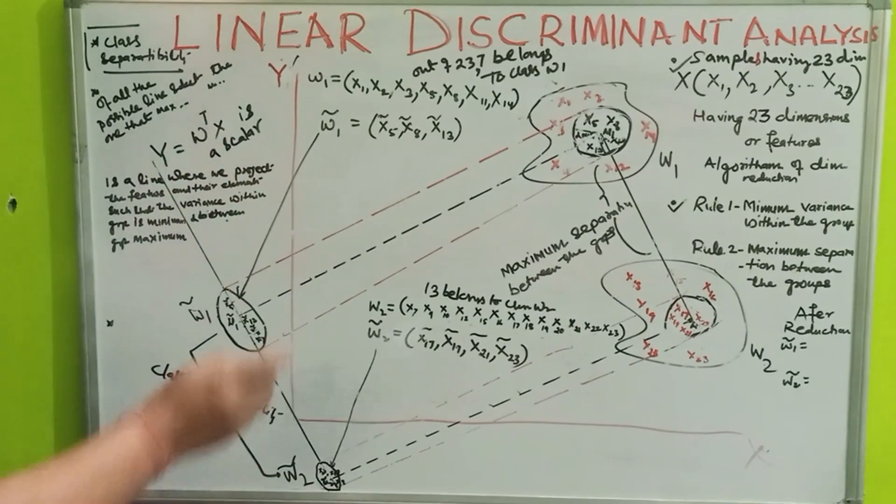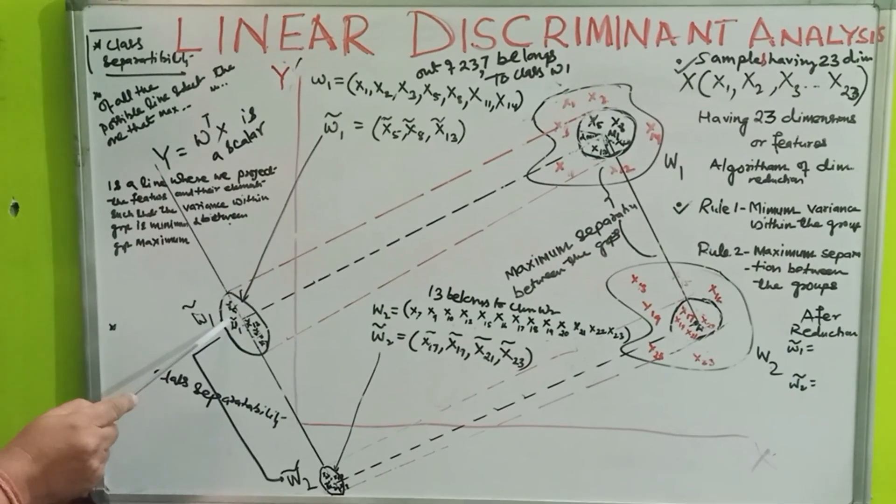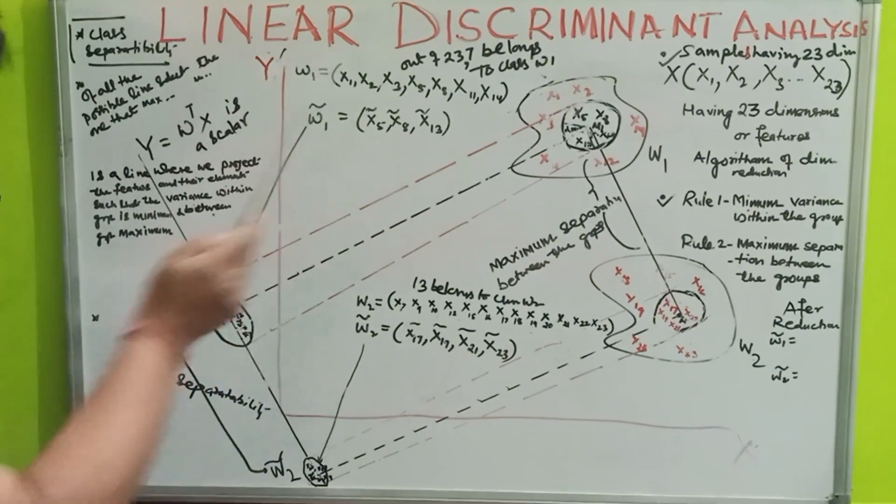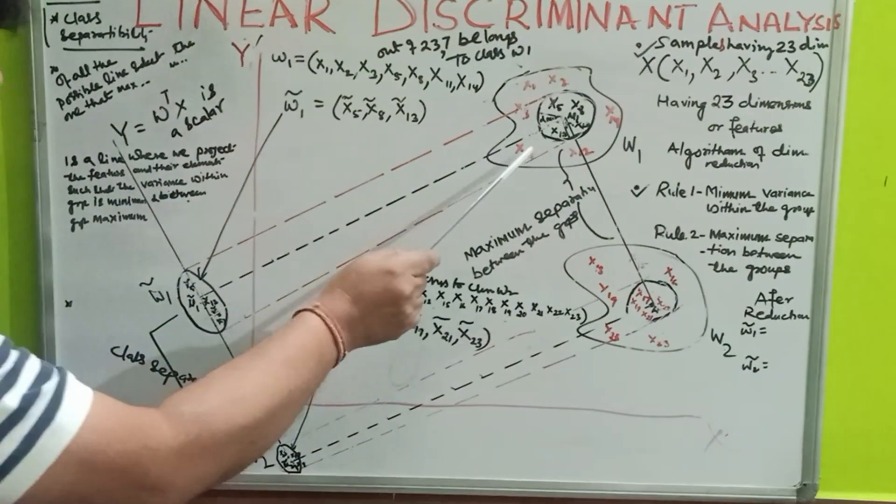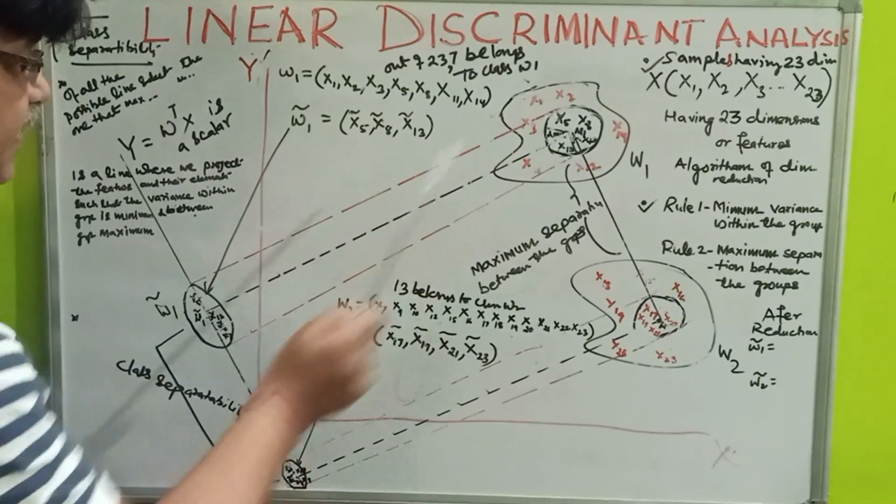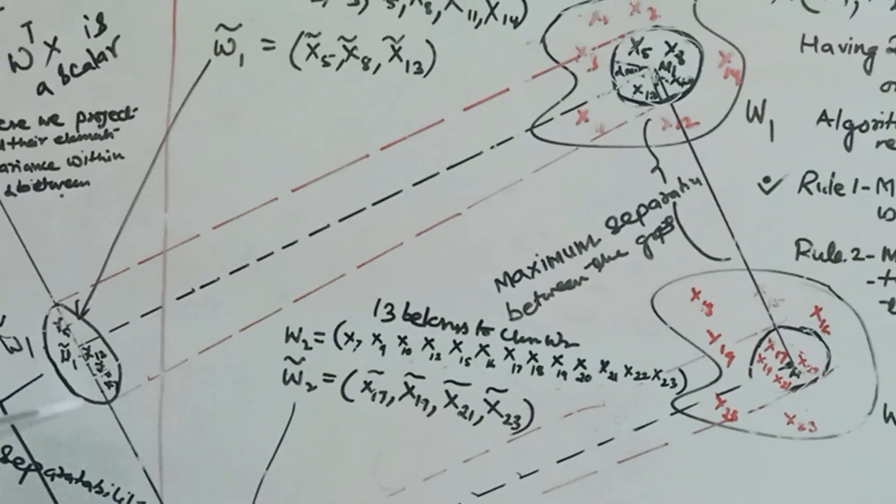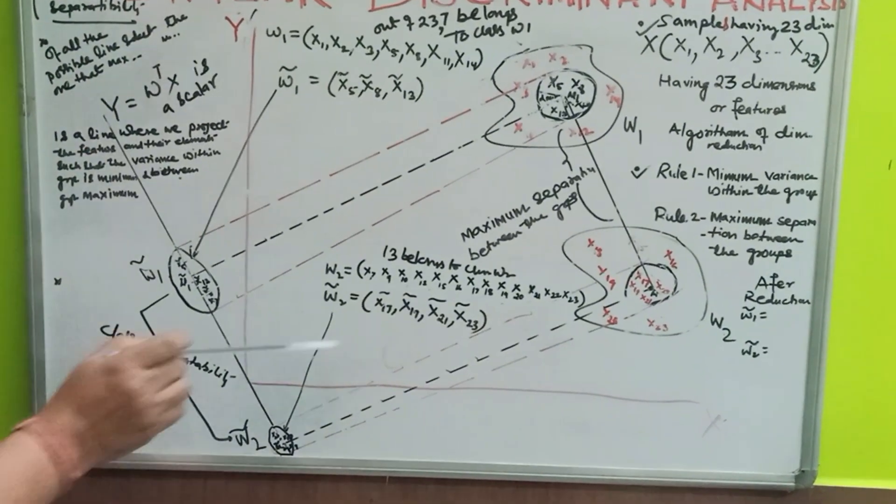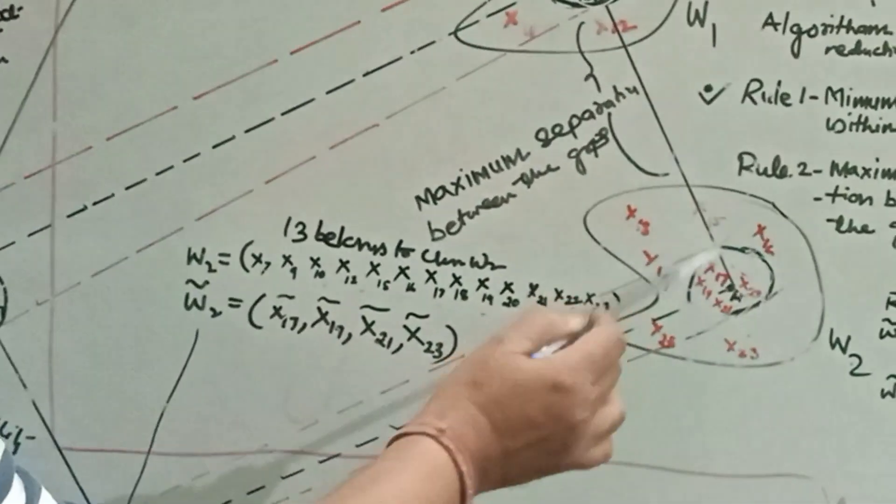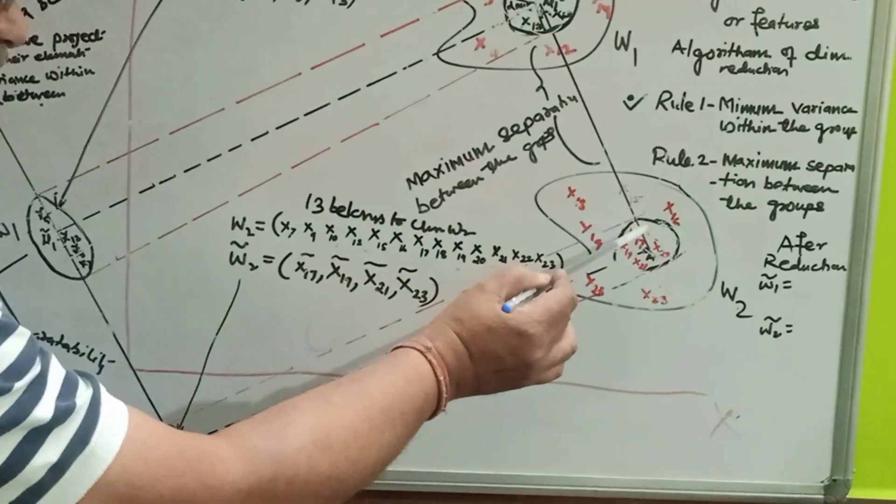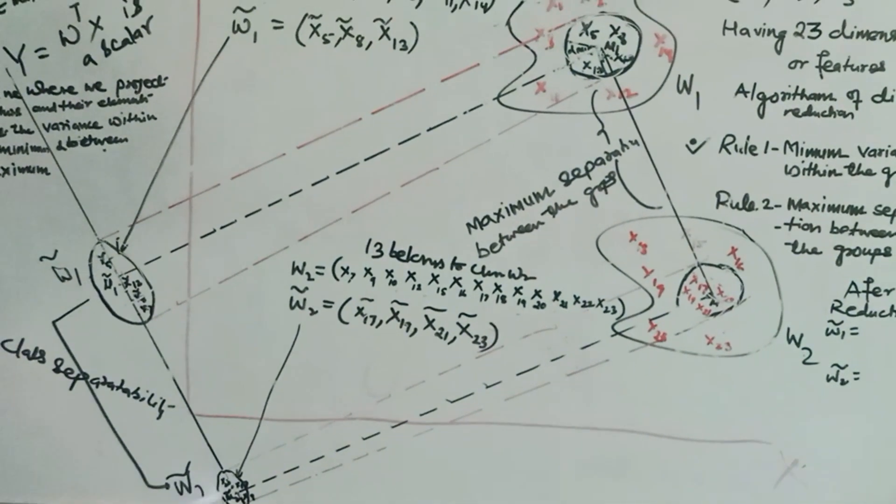So, what I did, coming over here, the projection of mu1 in this line is mu1 cap. So, mu1 cap is the projection of this mu1. And for this group, the projection of element X5 is here, X12 is here, and X13 is here, and X8 is here. So, projecting all the features, and these imaginary features have minimum variance within it.